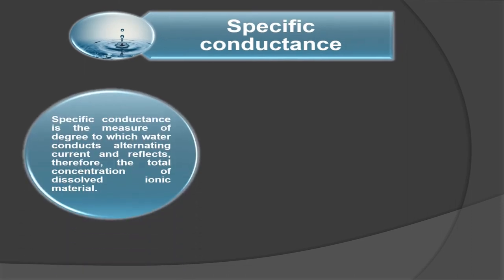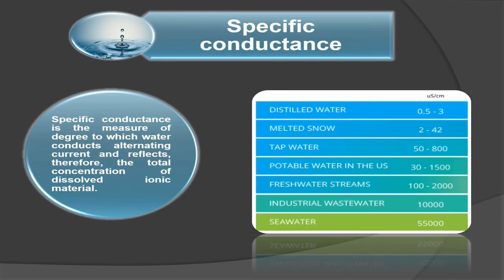Specific conductance is the measure of the degree to which water conducts alternating current and reflects, therefore, the total concentration of dissolved ionic material. So if we analyze the specific conductance of water, this gives us the value of dissolved ionic material present in the water.